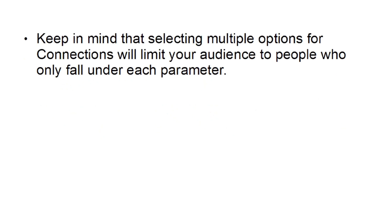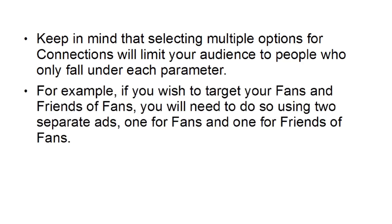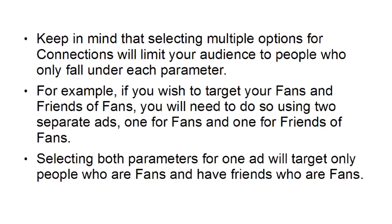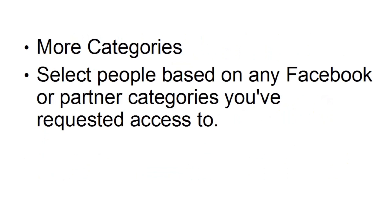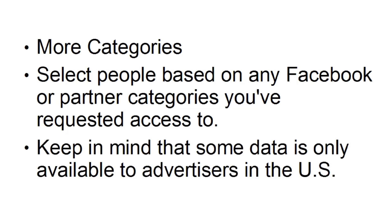Keep in mind that selecting multiple options for connections will limit your audience to people who fall under each parameter. For example, if you wish to target your fans and friends of fans, you're probably better off using two separate ads — one for fans and one for friends of fans — because selecting both parameters for one ad will target only people who are fans AND have friends who are fans. There are more categories as well. You can select people based on any Facebook or partner categories that you've requested access to, although some data is only available to advertisers in the US, because Facebook is a US-based company and data protection laws apply in various places.